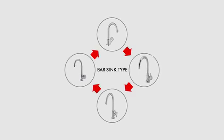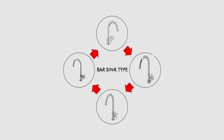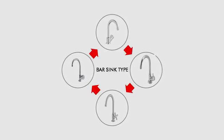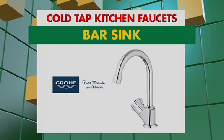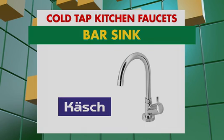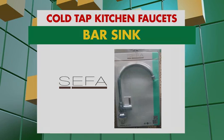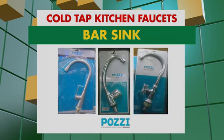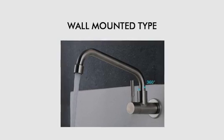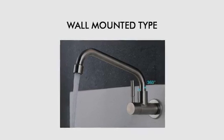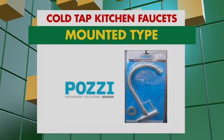Ang cold top kitchen faucets ay available sa bar sink type at sa wall mounted type. Ang cold top bar sink kitchen faucets ay available sa Grohe, Cash, Cepha, at sa Posee brand. Ang cold top wall mounted kitchen faucets naman ay available sa Cash at Posee brand.